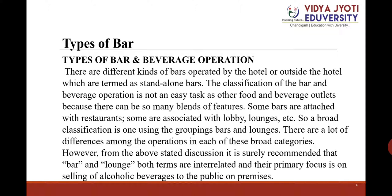Types of bar and beverage operations. There are different kinds of bars operated by the hotel or outside the hotel, which are termed as standalone bars. The classification of bar and beverage operations is not an easy task, as there can be so many blends of features. Some bars are attached with restaurants, some are associated with the lobby, lounges, etc. A broad classification uses the grouping of bars and lounges, and both terms are interrelated with a primary focus on selling alcoholic beverages to the public on premises.